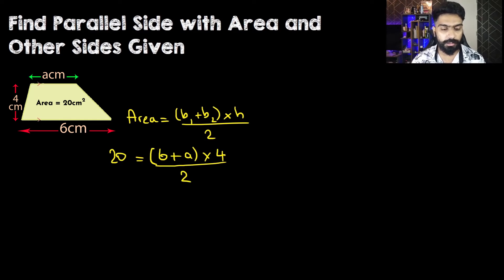If you take a look at this, we see that we can easily simplify these two. 2 will go to 1 and 4 will change to 2 because both of them can divide by 2. So what do we have remaining? 20 equals 6 plus a multiplied with 2.